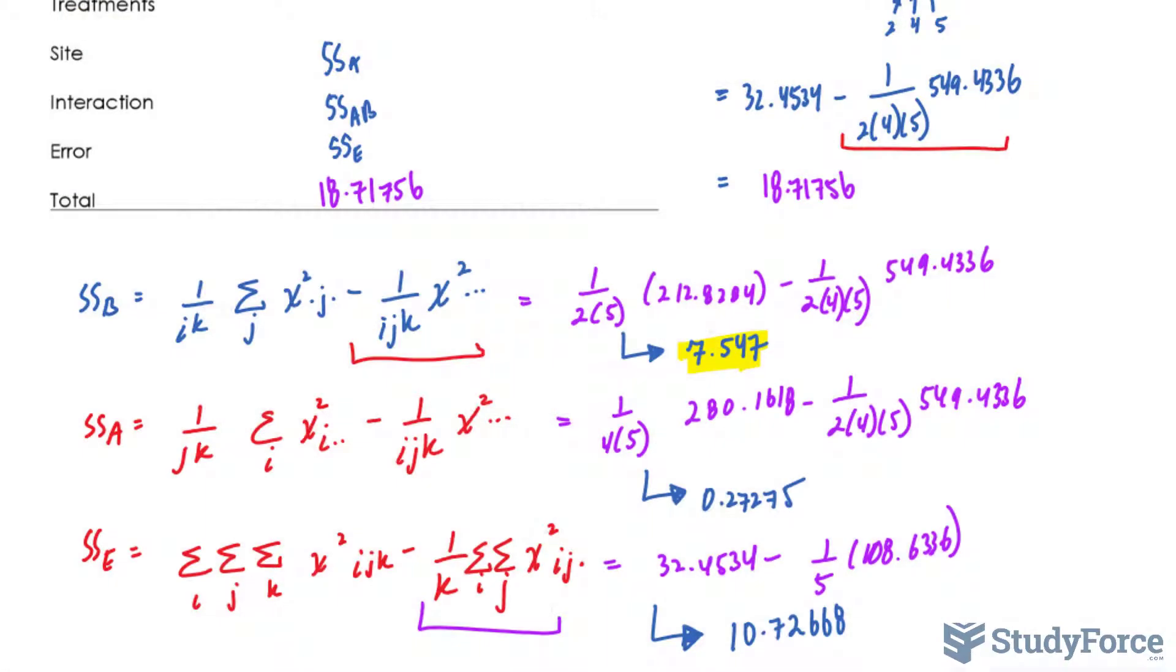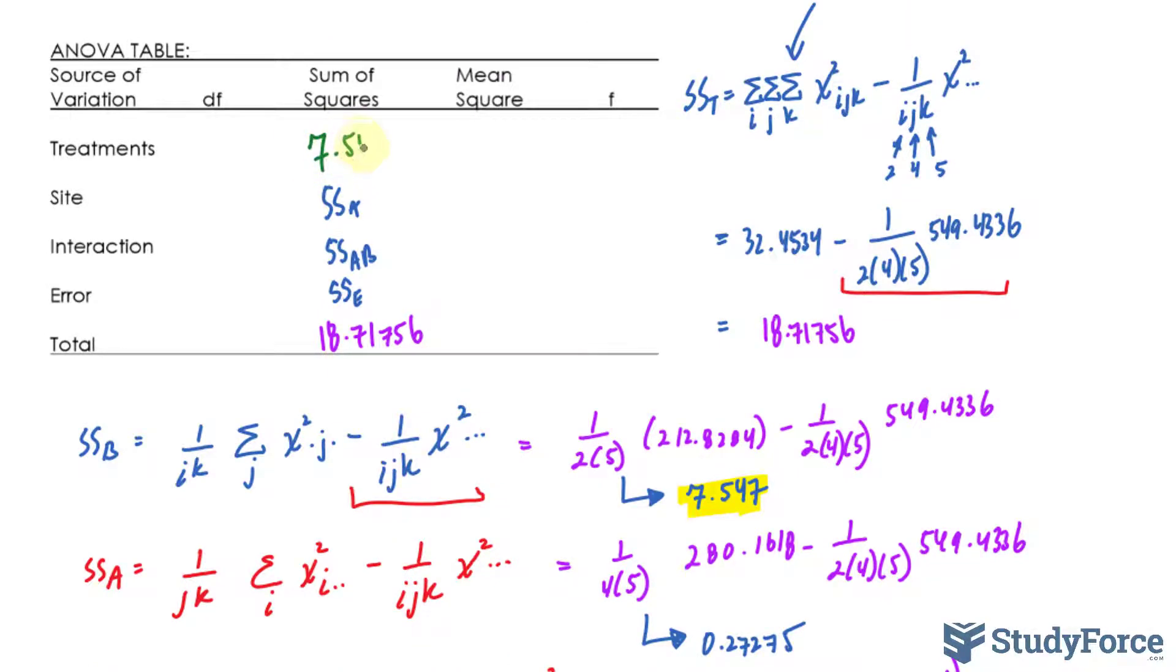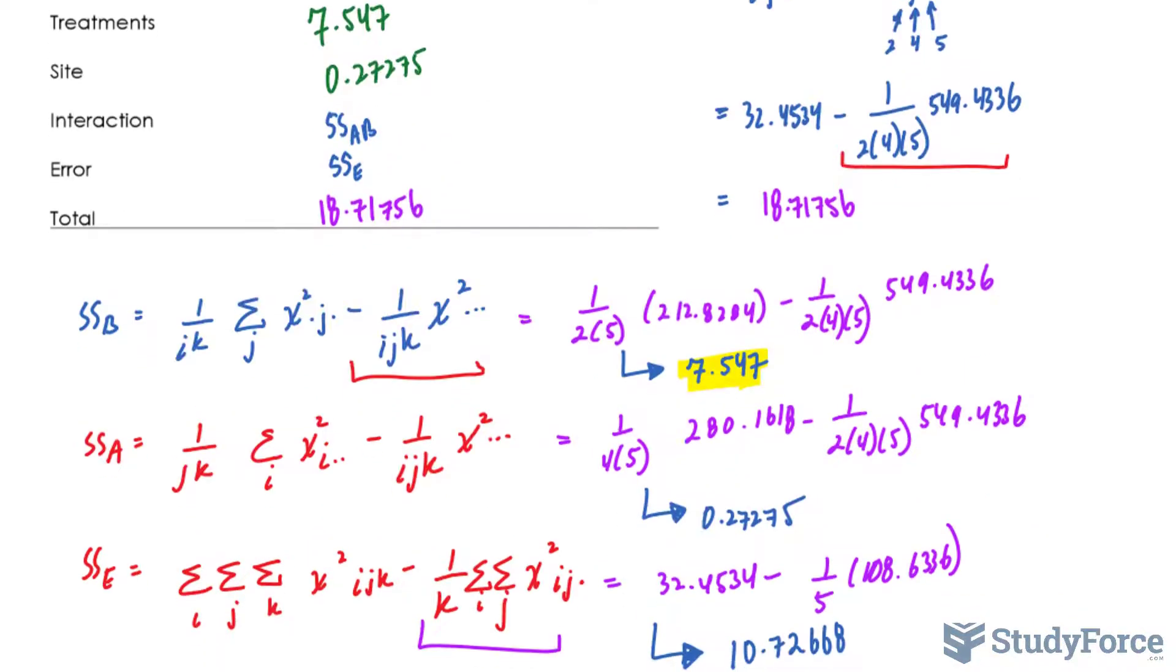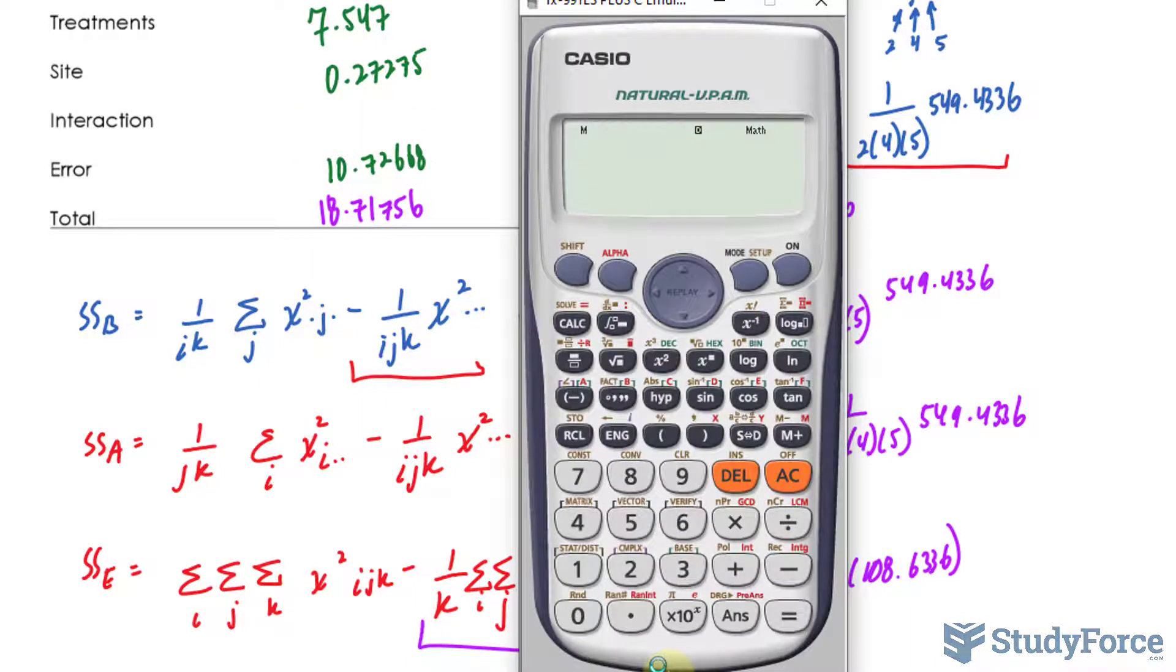Let's go ahead now and throw those numbers into our table. We have 7.547. For site, SSA was 0.27275. For SSE, we take the total, as explained earlier, 18.71756, and subtract 7.547 minus 0.27275 minus 10.7266. And we get 0.17113.